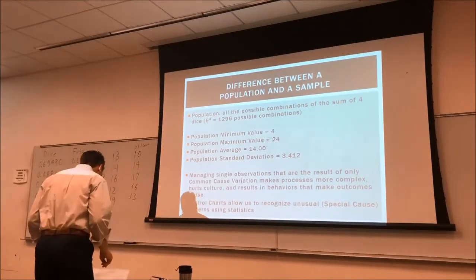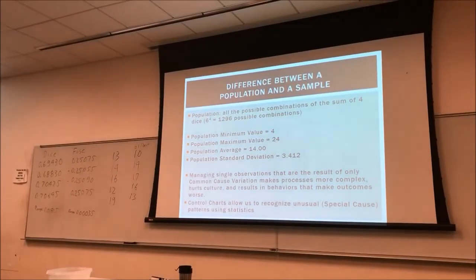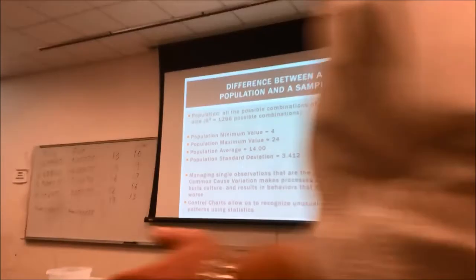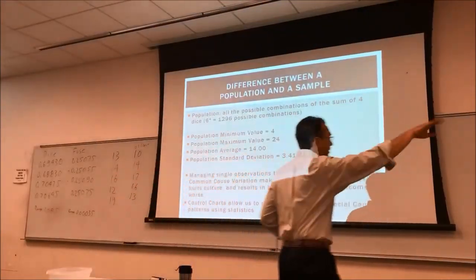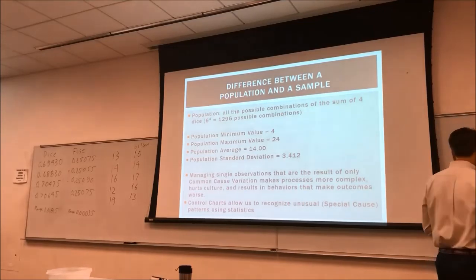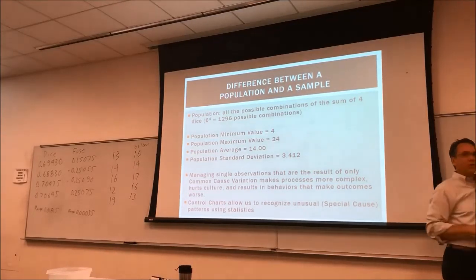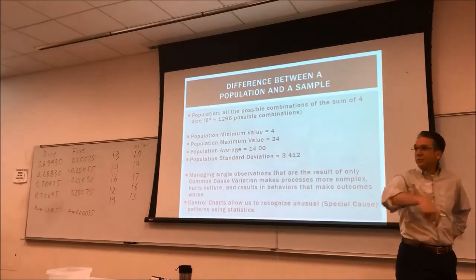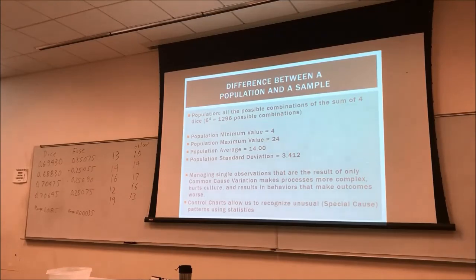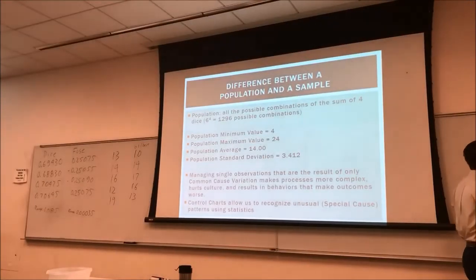Looking at one data point isn't going to tell you if a process is getting better or worse — you have to look at a distribution of data. Let's have the other half of the class try. Maybe this side of the room is better at rolling dice. Each of you has four dice — just roll them, add them up, and I'll write them up here. What'd you get? 17. Good. And 21 — that's awesome! 17. Let's roll again. 17 and 17. Again: 21 and 21.